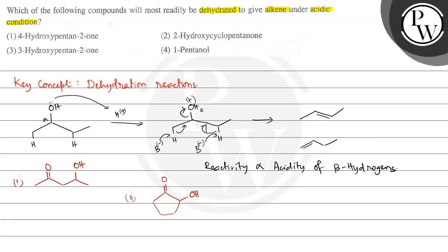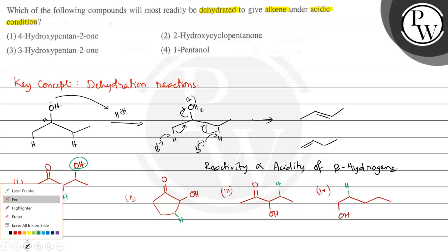The third compound is 3-hydroxypentane-2-one: the pentane-2-one structure with a hydroxy group at the third position. The fourth compound is 1-pentanol, which has a simple primary alcohol structure.